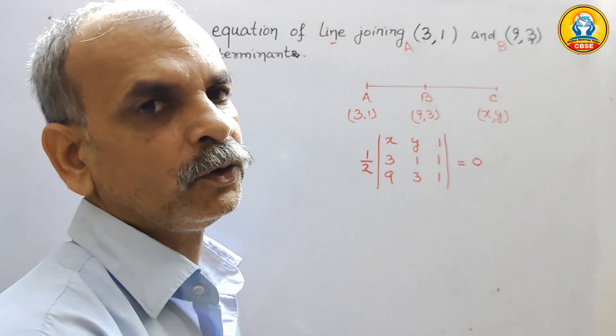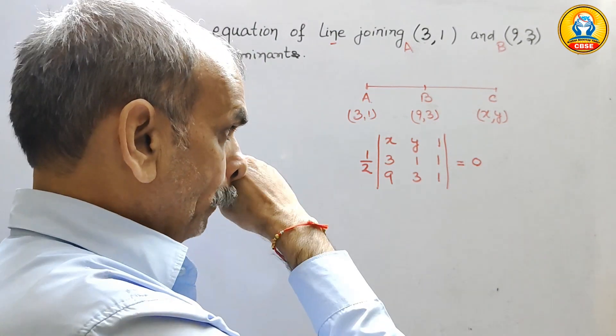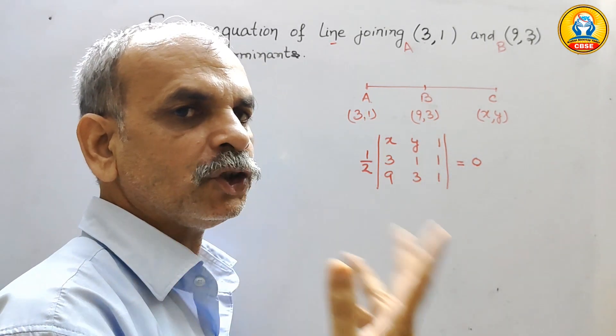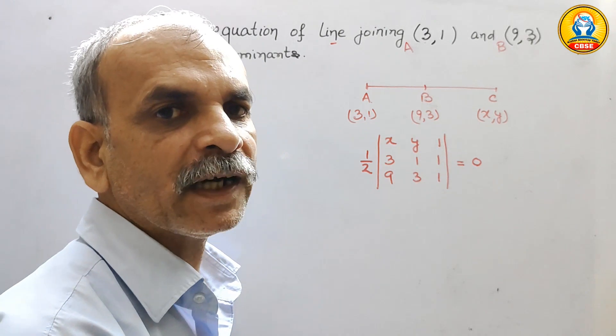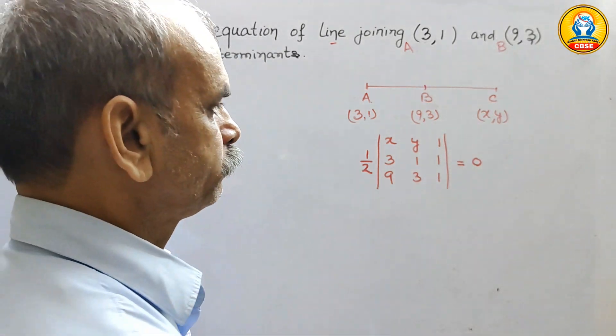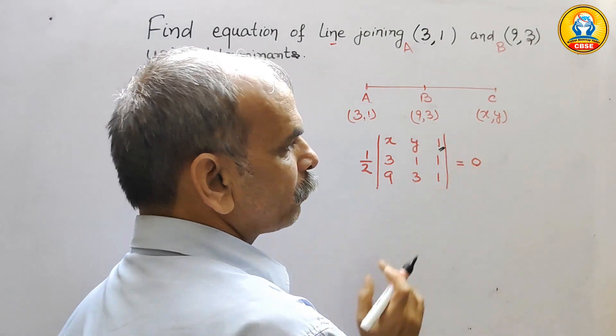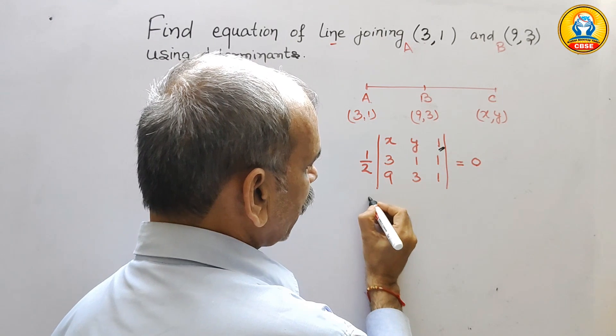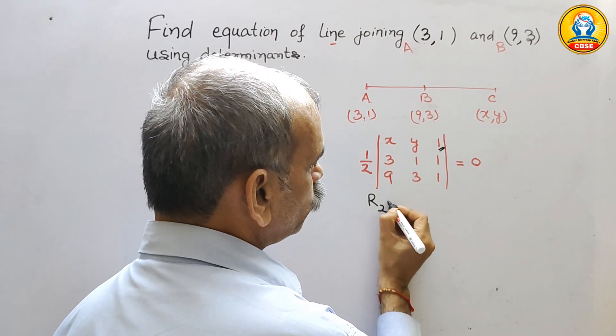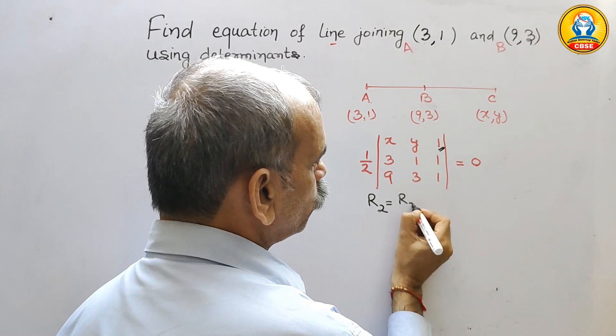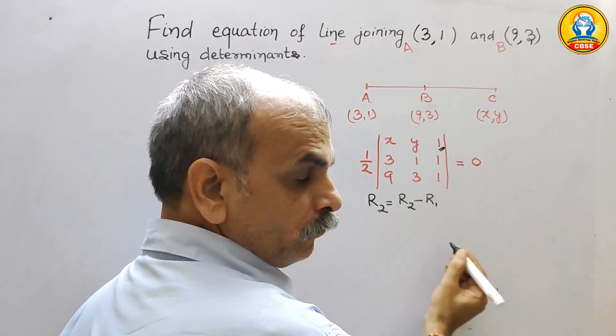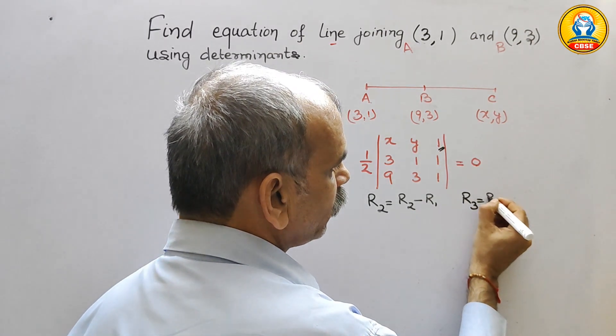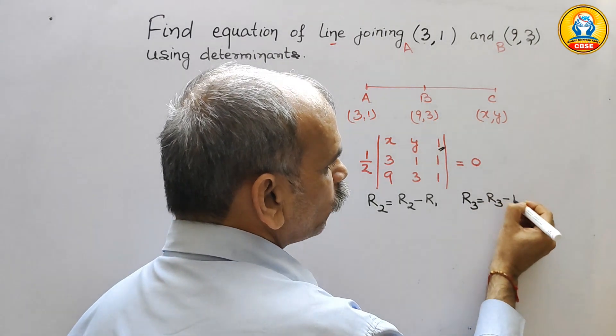That we have to do it. Now, so here 3, 1 is there, we can make 2 of them as 0 by taking R1 as your master row. This will be your master now. So now we will go for that. R2, ρ2 is equal to ρ2 minus ρ1 and ρ3 is equal to ρ3 minus ρ1.